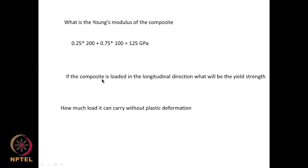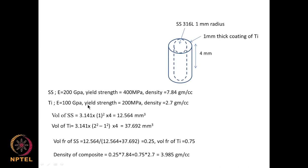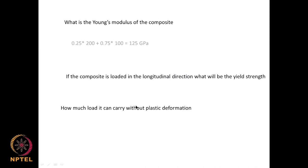If the composite is loaded in the longitudinal direction, what will be the yield strength? Using the same mixture rule with yield strengths of 400 MPa (stainless steel) and 200 MPa (titanium): 0.25 × 400 + 0.75 × 200 = 100 + 150 = 250 MPa.